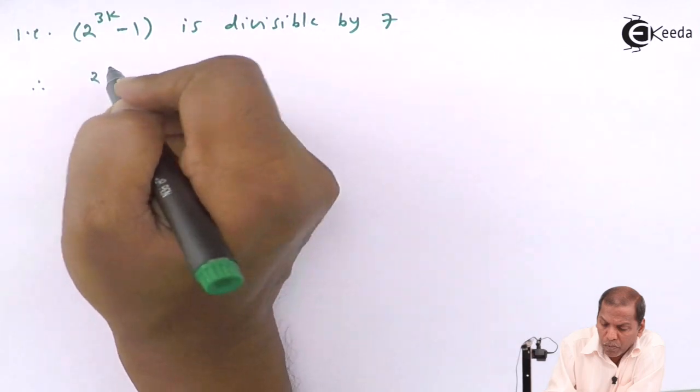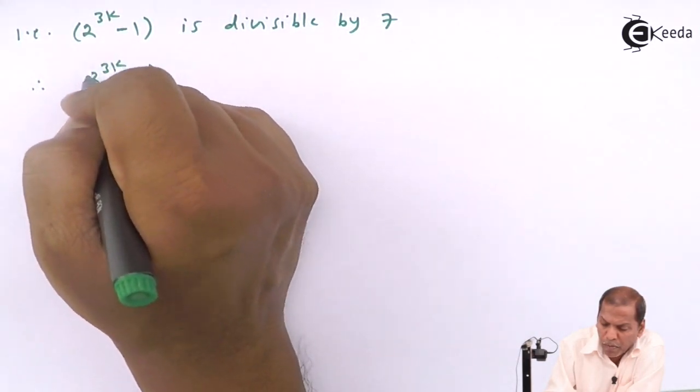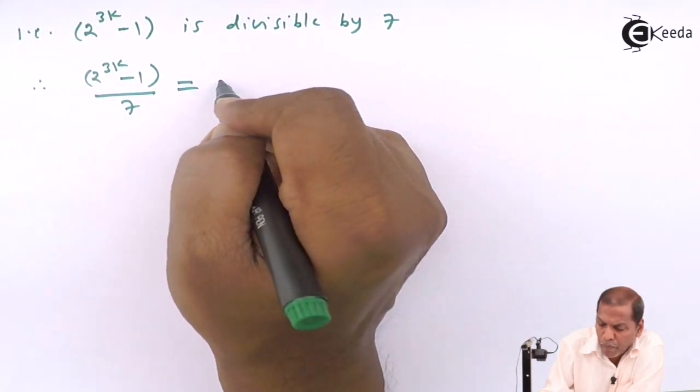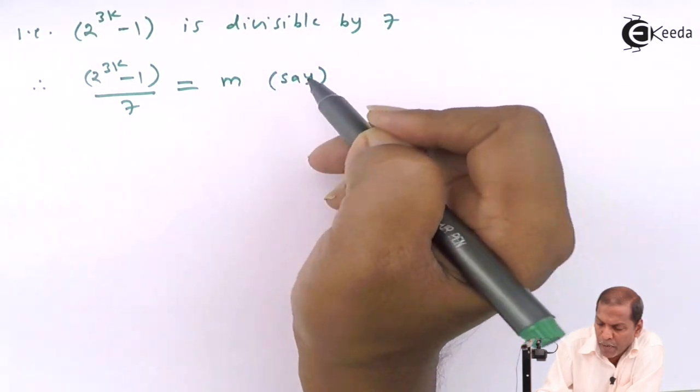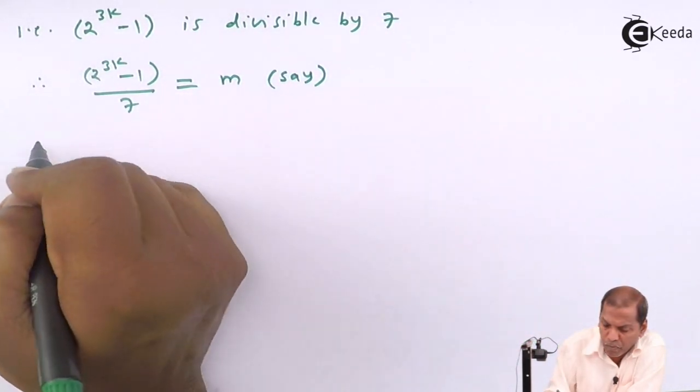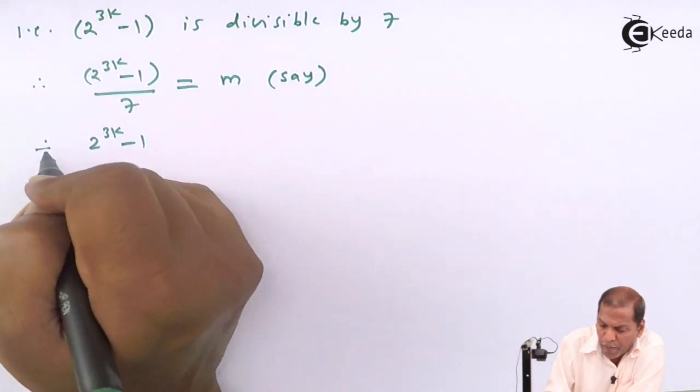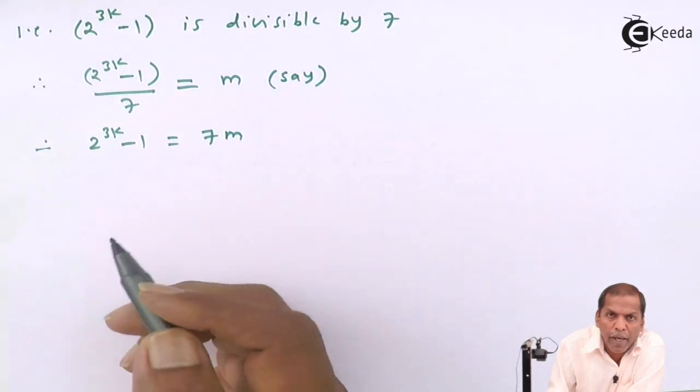Therefore 2 raised to 3k minus 1 upon 7 equals m, say. Therefore 2 raised to 3k minus 1 equals 7m.